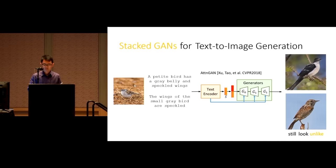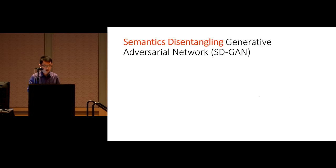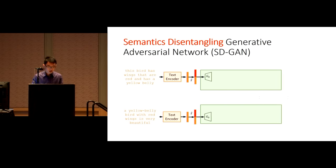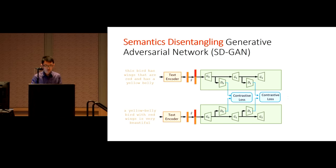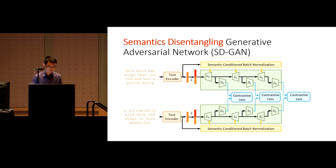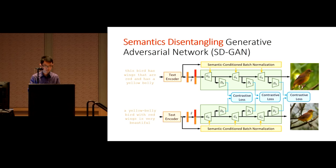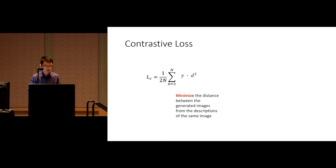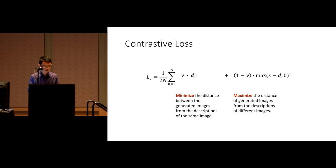To overcome this problem, we propose a Semantic Disentangling Generative Adversarial Network (SDGAN). Each branch of the siamese structure is a hierarchical GAN for text-to-image generation. During the training period, these two branches are optimized together by the contrastive loss. The contrastive loss is used to minimize the distance between the generated images from descriptions of the same image, and maximize the distance of those from descriptions of different images.